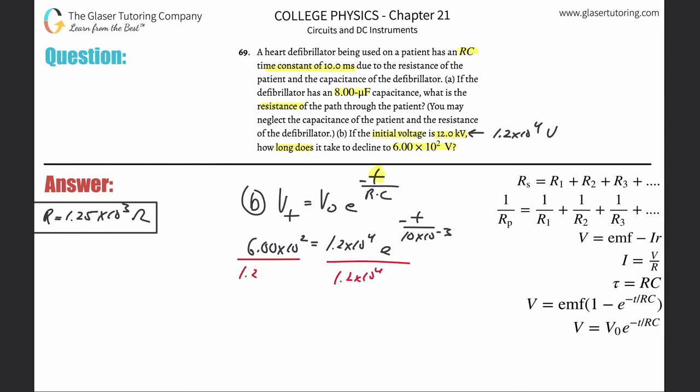Now what we can do is divide out the right-hand side by 1.2 times 10 to the fourth, because I'm trying to isolate my unknown. So this just simply now will become 6 times 10 to the 2 divided by 1.2 times 10 to the fourth. This works out to be 0.04. How nice. Is equal to now E to the negative T over 10 times 10 to the minus three. And hopefully it's clear that that whole thing is the exponent.